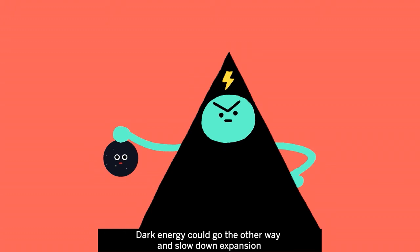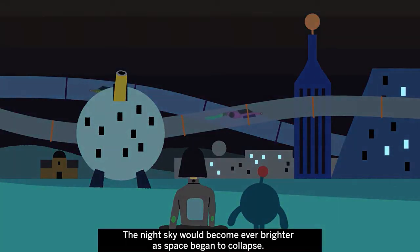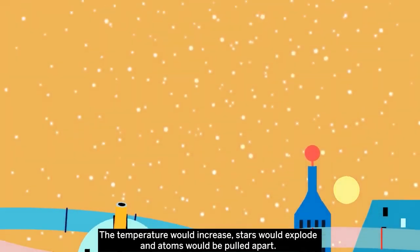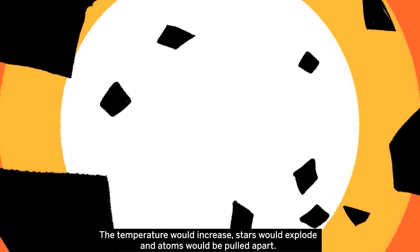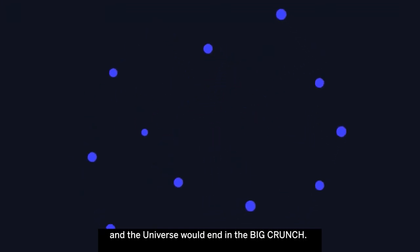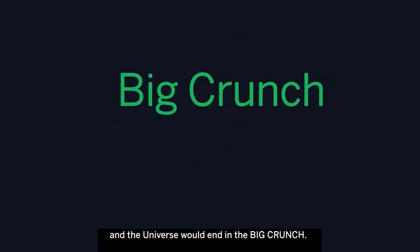Dark energy could go the other way and slow down expansion. The night sky would become ever brighter as space began to collapse. The temperature would increase, stars would explode, and atoms would be pulled apart. All matter would collapse into black holes, and the universe would end in a big crunch.